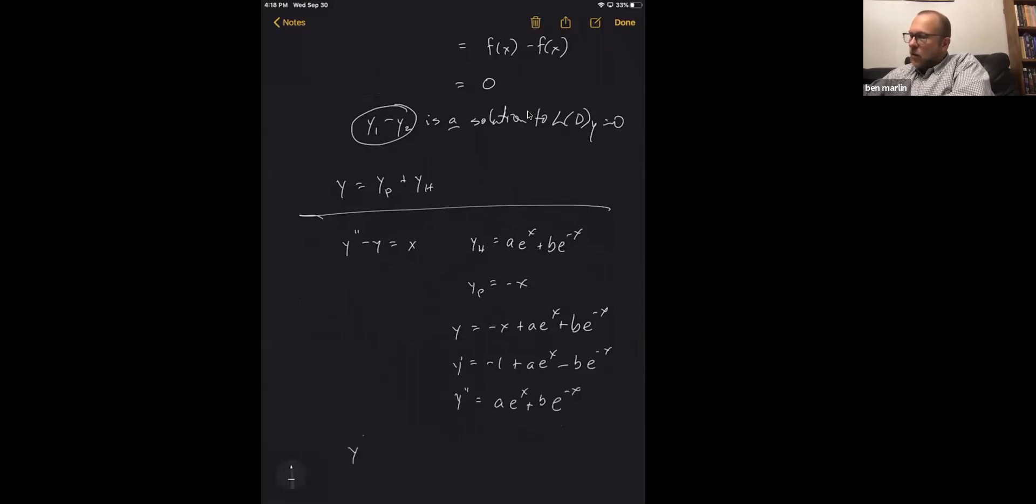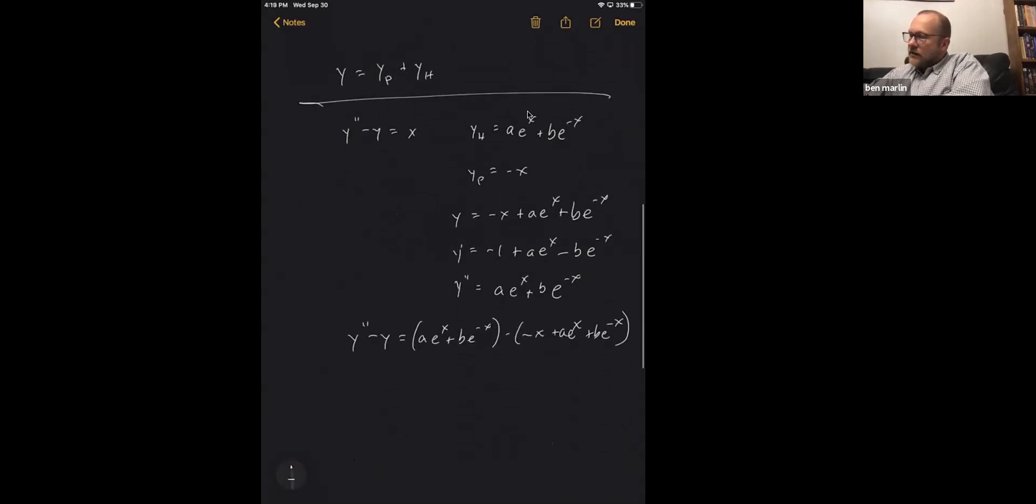So when we plug in y double prime minus y, we'll have a e to the x plus b e to the minus x minus minus x plus a e to the x plus b e to the minus x. And so you see how these will cancel out since we're subtracting, and you have a minus of a minus x to get you just that plus x.